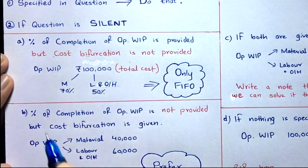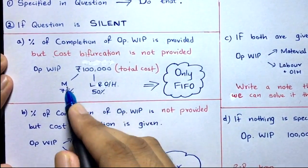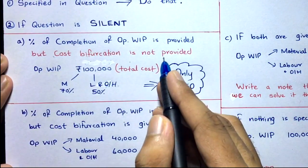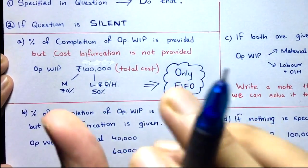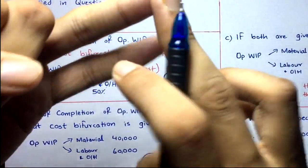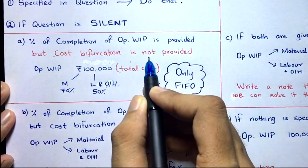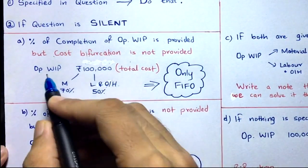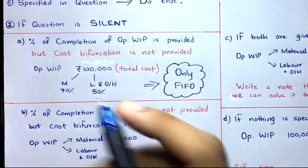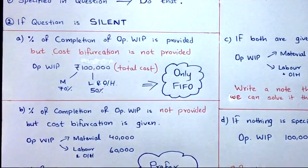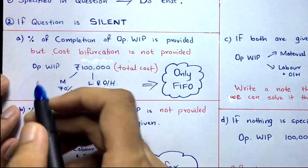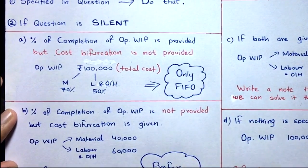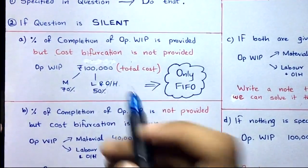Case A: the percentage of completion of opening WIP is provided — for example, material 70% complete, labor and overhead 50% complete — but cost bifurcation is not given. The opening WIP total cost is given as one lakh, but material cost and labor cost are not given separately. In this situation you cannot apply the WAM method, because in WAM you need to add opening WIP material cost with current period material cost separately. So if bifurcation is not there, the only option is the FIFO method.